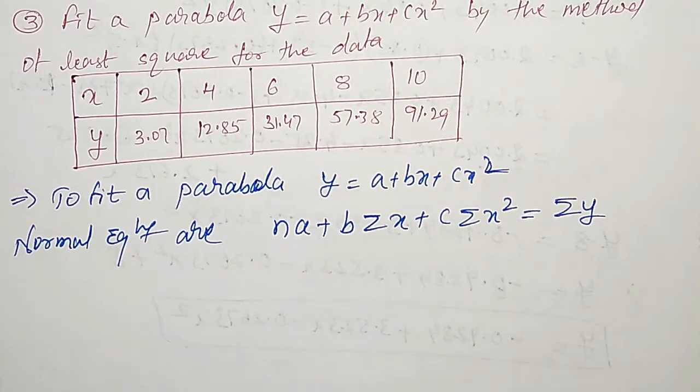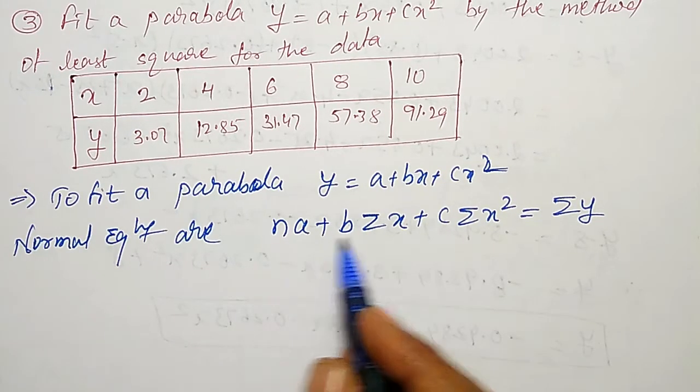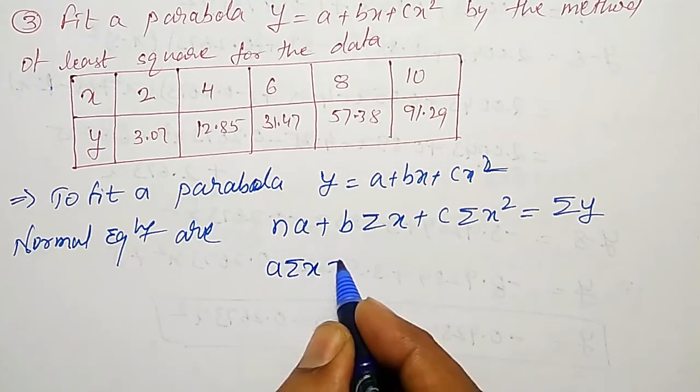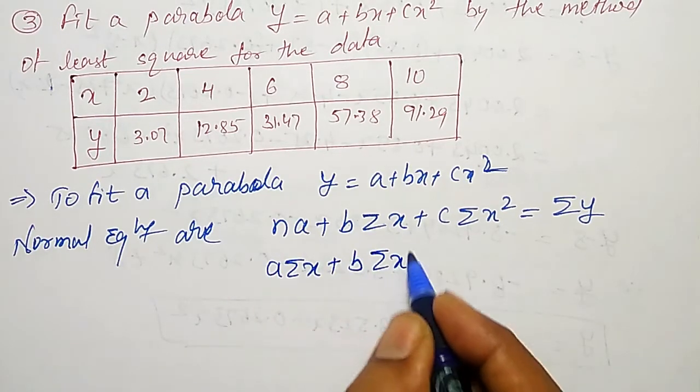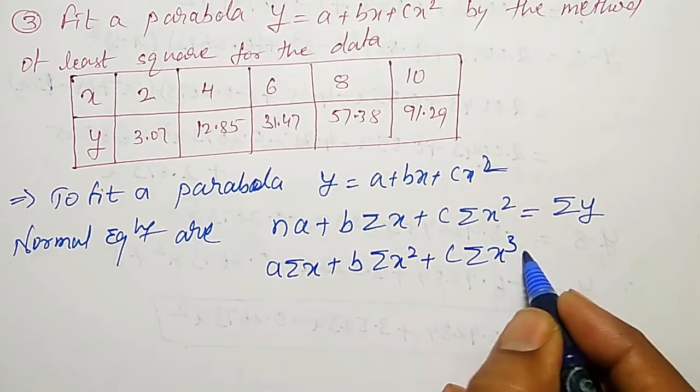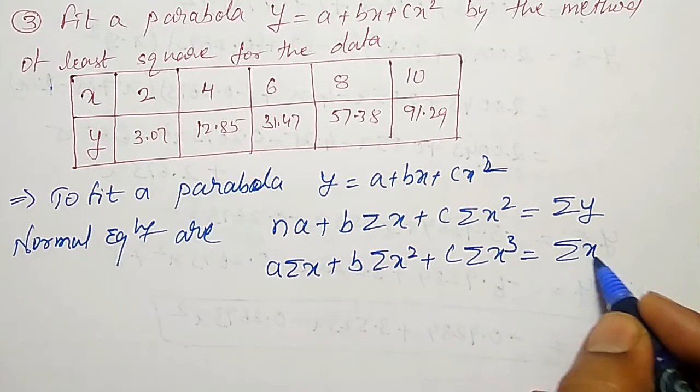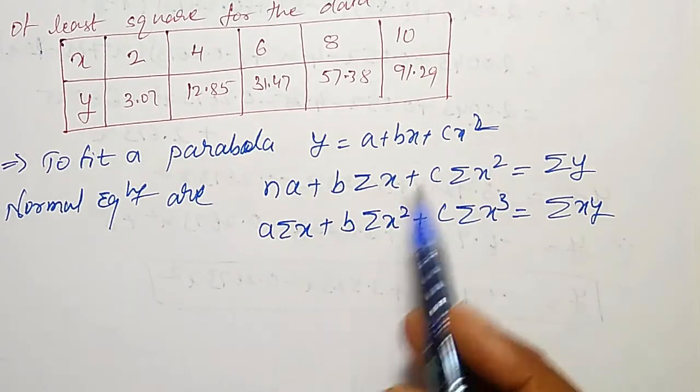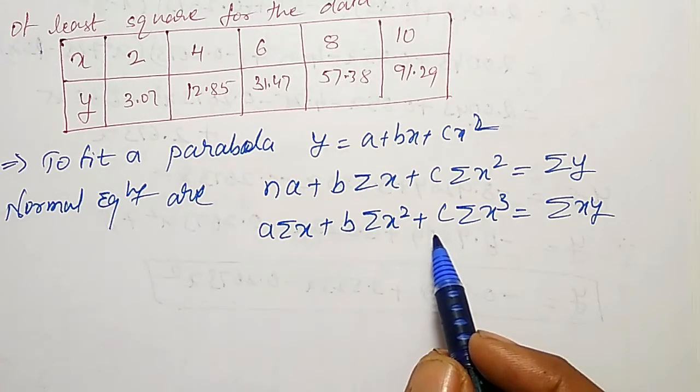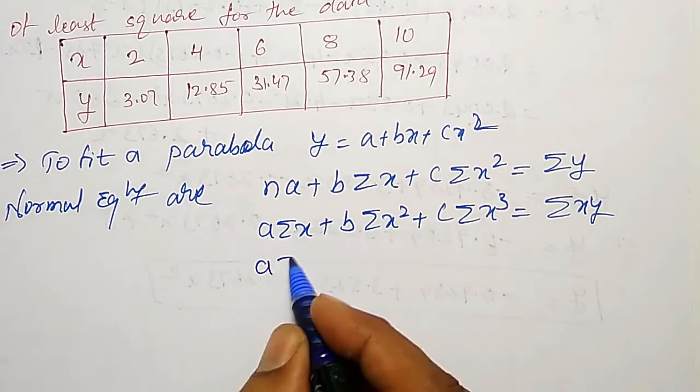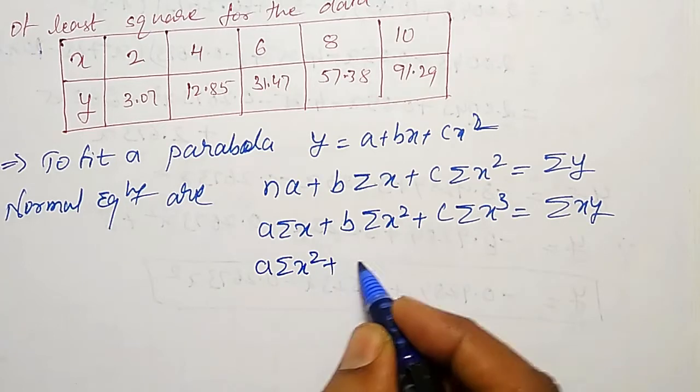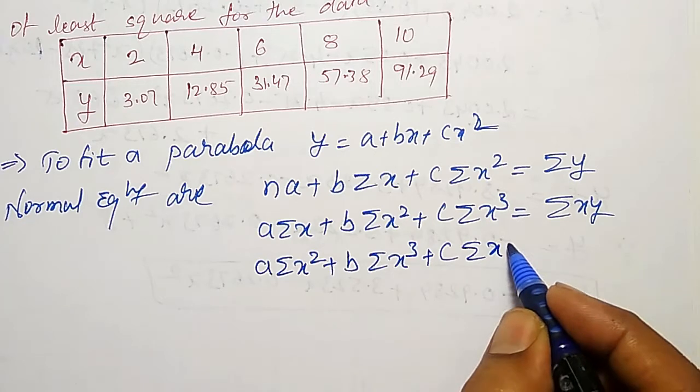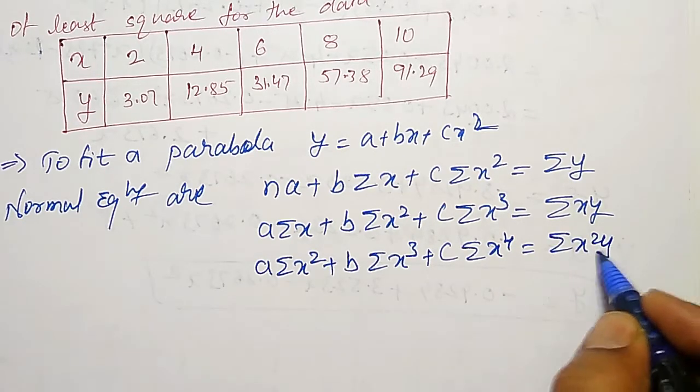To get the second equation, multiply by x and then apply the summation. That is, a into summation x, b into summation x square, c into summation x cube equal to summation xy. Similarly, multiply by x square to get the third normal equation: a into summation x square plus b into summation x cube plus c into summation x raise to 4 equal to summation x square y.